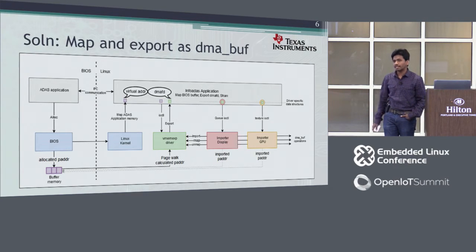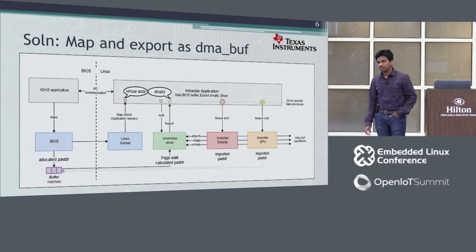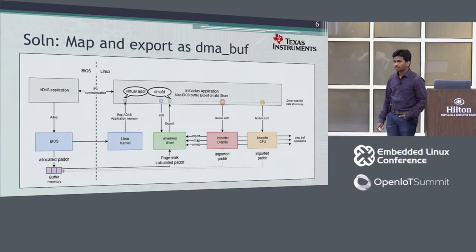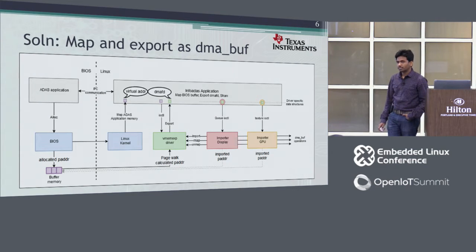In the device tree we typically carve out a memory region — a contiguous memory region — and specify those region values at boot-up of the RTOS processor. All RTOS applications then allocate buffers from that region. The virtual address mapping is done in user space application on the Linux side: the application maps the buffer and gets a virtual address which it passes to the vmamexp driver.